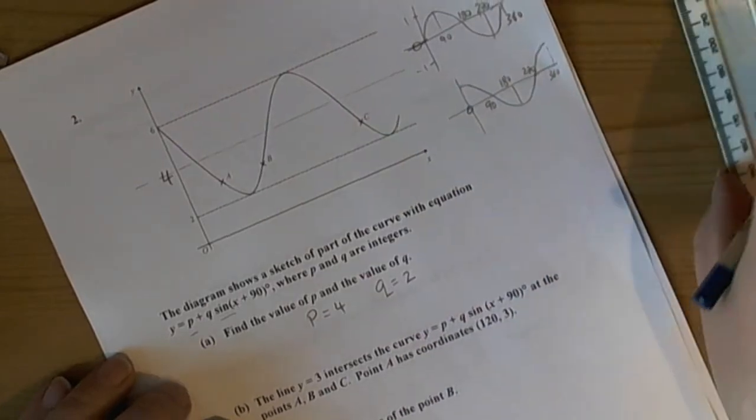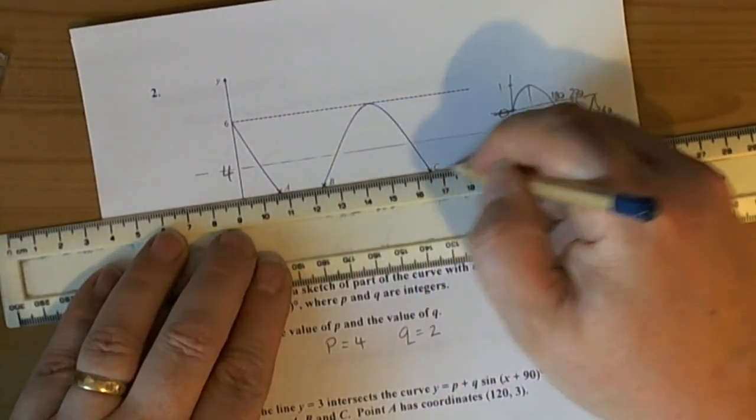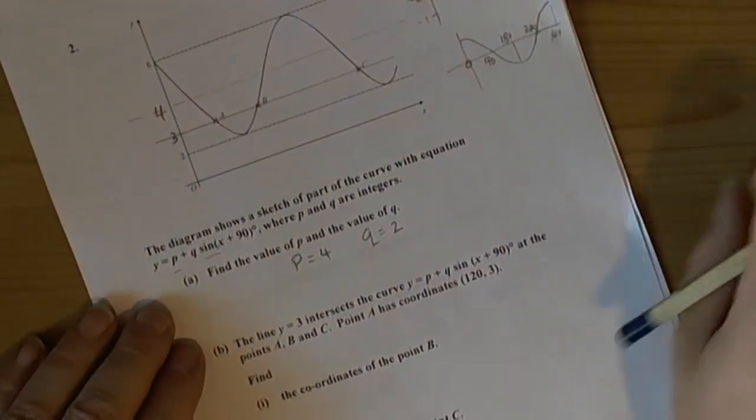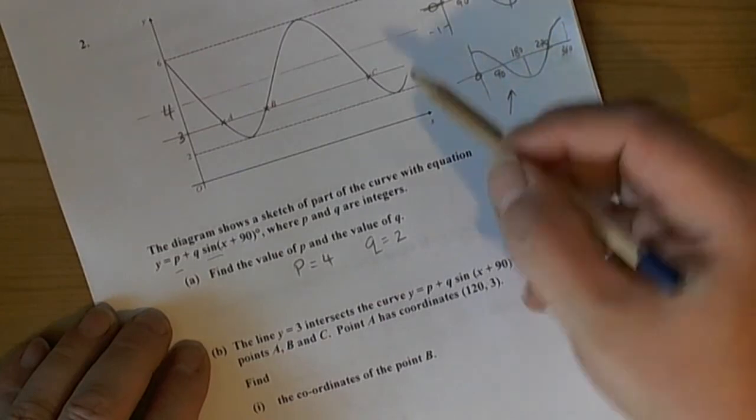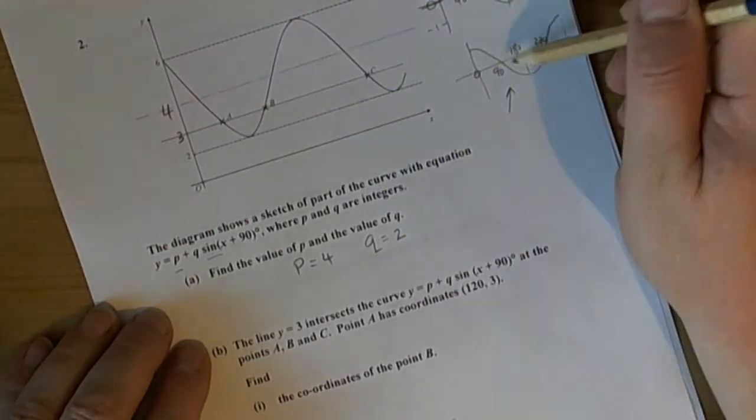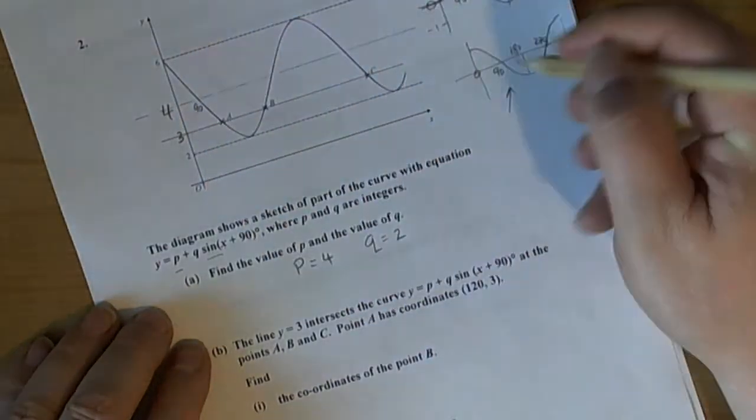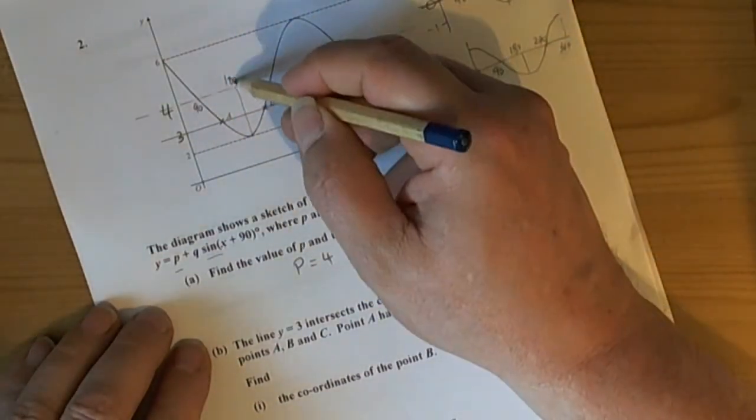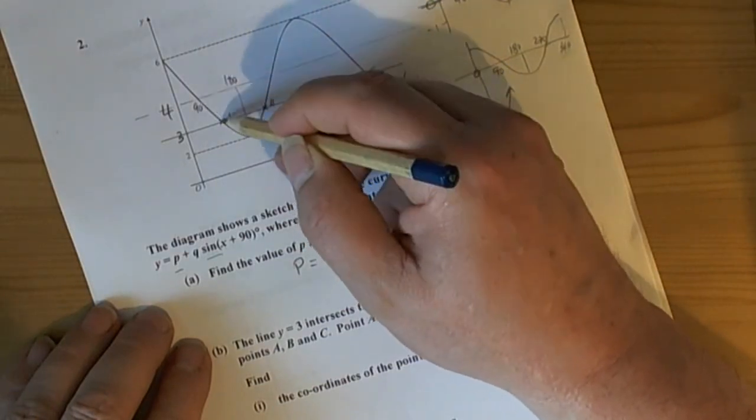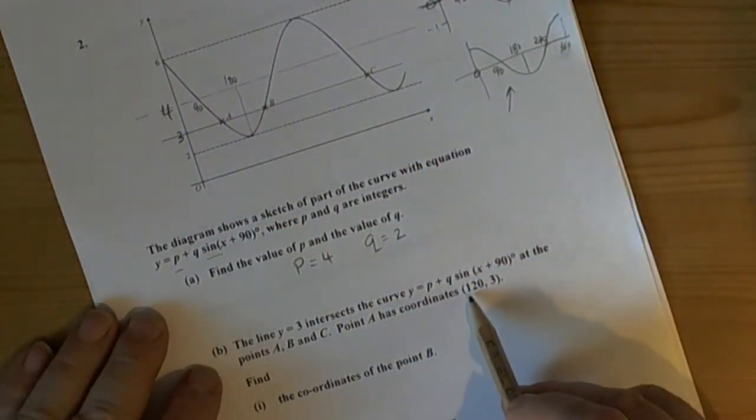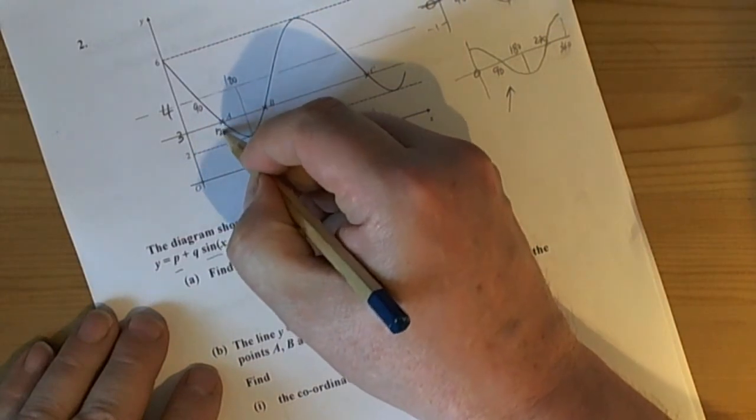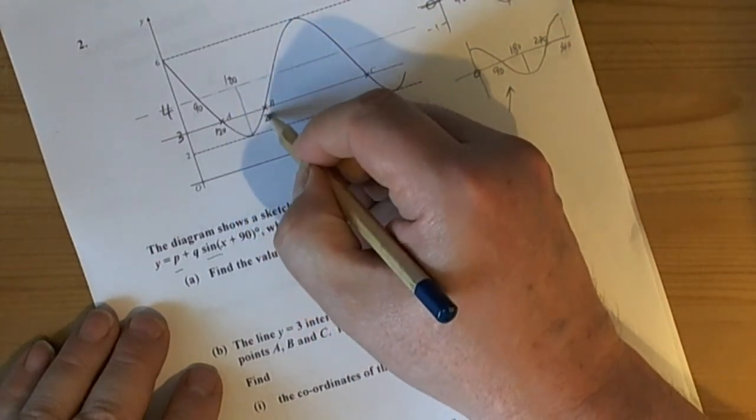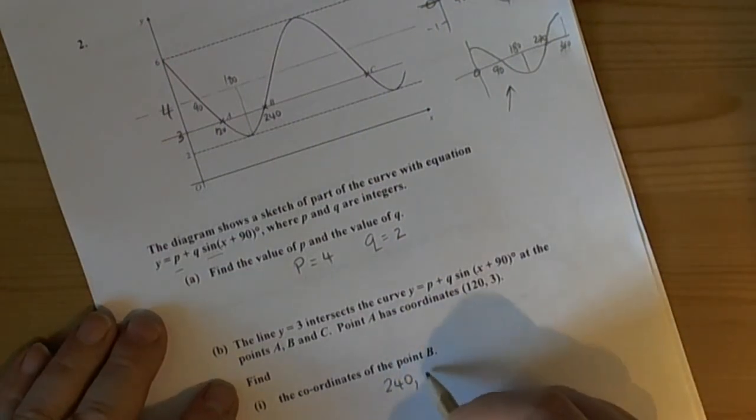The line Y equals 3 intersects the curve at the points A, B and C. So basically let's have a look what's happened. So we've gone across there so we know that's going to be the point 3. So if we look at the translated curve we can see that's, let's have a look, that's going to be 90 and it bottoms out at 180 so that's going to be 180. And we've got a line of symmetry going on here. So halfway between 3, 2. So let's have a look they've told us A as coordinate (120, 3). So it's a line of symmetry so 60 degrees away so this must be 60 degrees away so that's going to be 240. So B is going to be (240, 3).